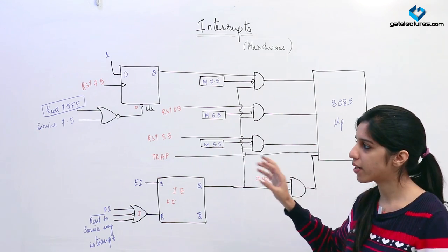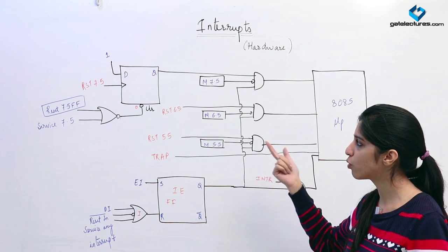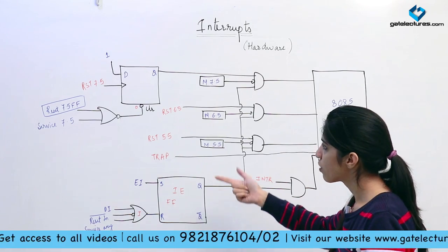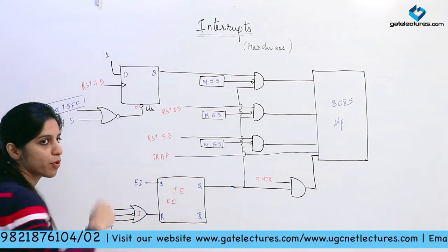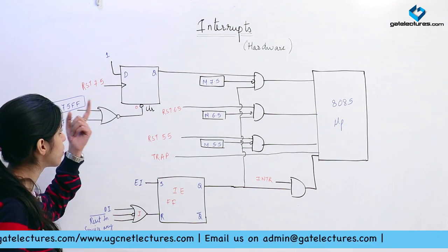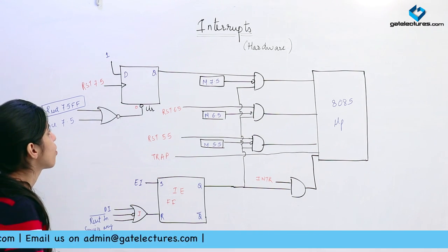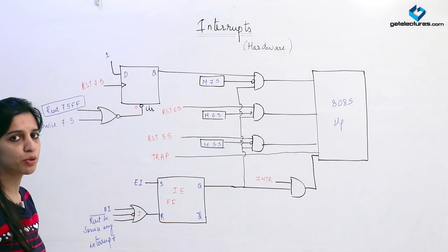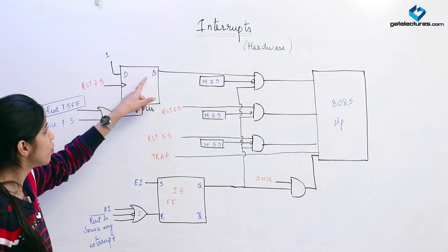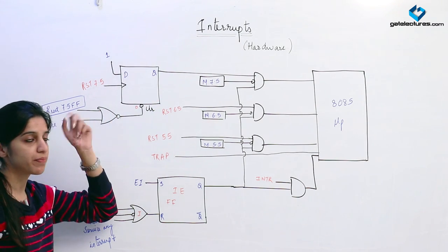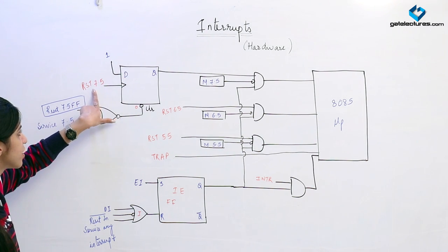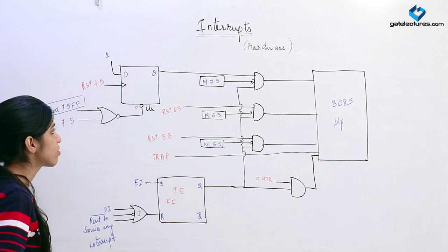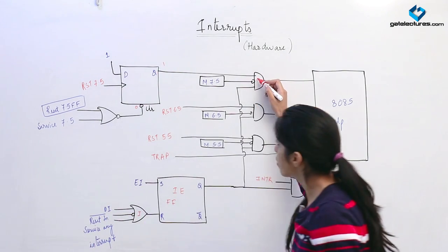Whenever we want to stop an interrupt, service an interrupt, prioritize one interrupt, or make an interrupt edge-triggered or level-triggered, we use this circuit. For RST 7.5, we are using a D flip-flop. D has been made 1 permanently, so whenever this RST 7.5 pin is high, this D flip-flop gets a clock and Q becomes 1. When Q gets 1, it means this interrupt has come.